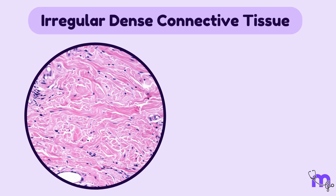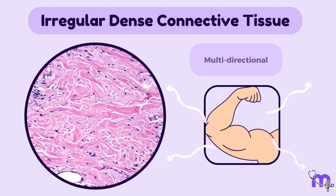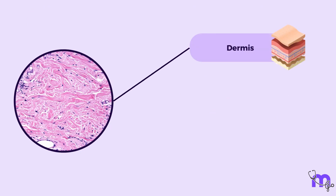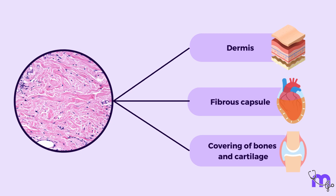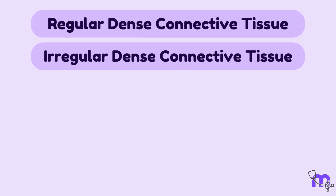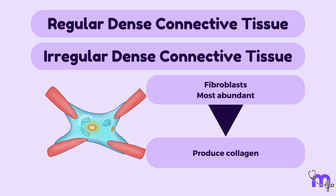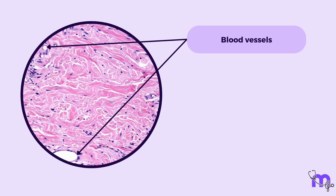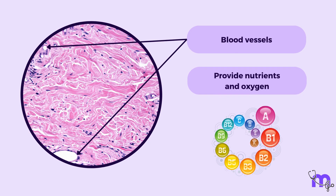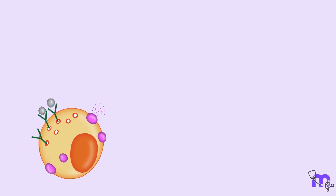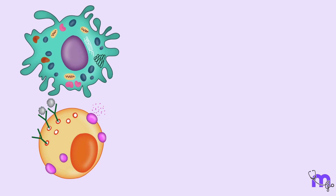Irregular dense connective tissue has collagen fibres arranged in a random fashion, providing strength in multiple directions. This type is found in the dermis of the skin, the fibrous capsule surrounding organs, and in the protective covering of bones and cartilage. In both types, fibroblasts are the predominant cell type responsible for producing the collagen fibres. Blood vessels are present but not as abundant as in loose connective tissue. Mast cells and macrophages may also be present for immune defence.